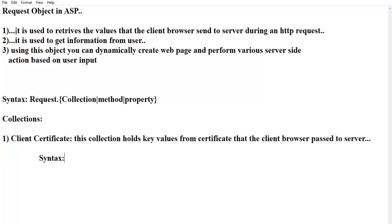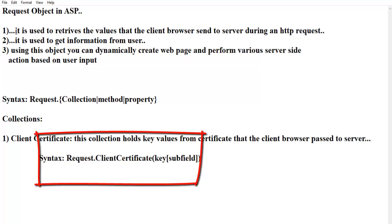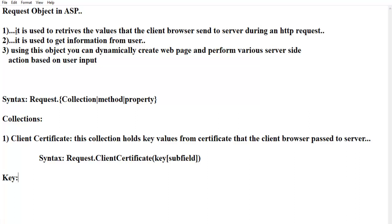The syntax is: Request dot ClientCertificate, collection name, key — which is client certificate — and in that you define the key values with a sub-field value. This is the syntax of the client certificate. The key specifies the name of the certificate field to read — it specifies which values you have to read.